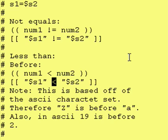Because the word zebra with a capital Z will actually come before the word ant with a lowercase a according to the ASCII character set. The other thing that you want to watch out for is 19 will come before the number two.